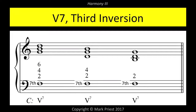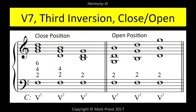The bass of the third inversion is the seventh of the seventh chord. The upper voices, assigned the fifth, third, and root of the complete chord, are placed at the respective intervals of sixth, fourth, and second above the bass note — hence the figuring VI-IV-II, abbreviated as V4-2, often just V2. It doesn't matter if the upper voices are arranged in close position or in open position. What is important is that the seventh of the V7 chord is situated in the lowest voice. Close, open.